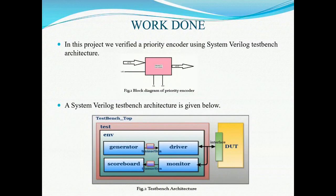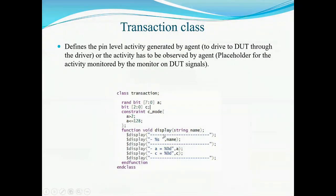Now we will look into each module. Next is the transaction class. The transaction is declared as a class. It defines the pin level activity generated by the agent, or generates the stimulus required. Inside the transaction class we write all the stimulus. The transaction acts as a placeholder for activity monitored by the monitor. The stimulus is A and we get output C. To randomize input A, it is declared as rand. To give a constraint to the input, constraint C mode is used — constrained so that it does not go below 2 and does not go above 128.